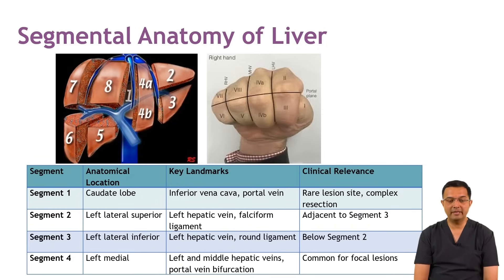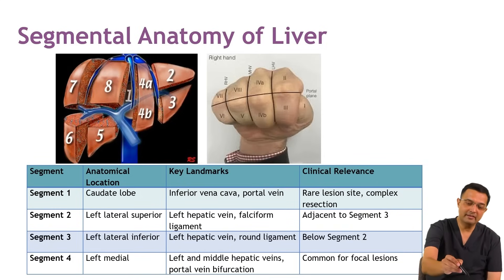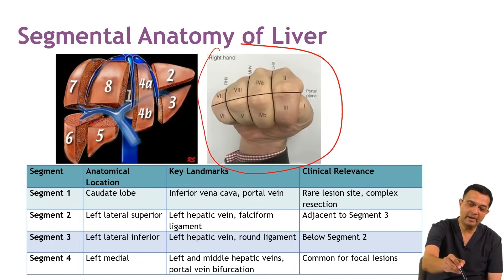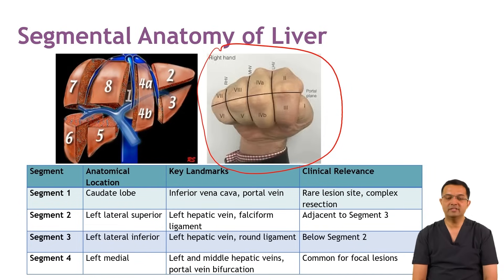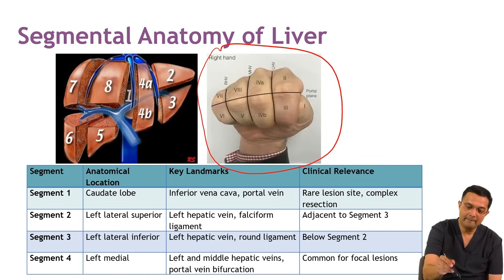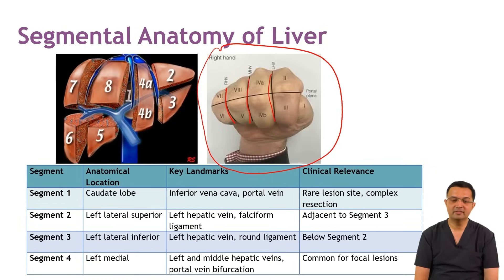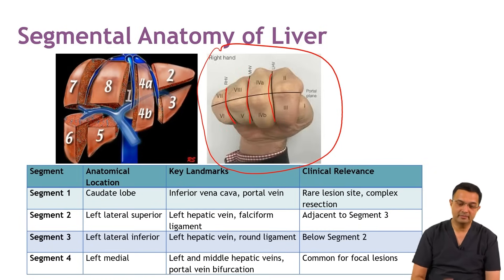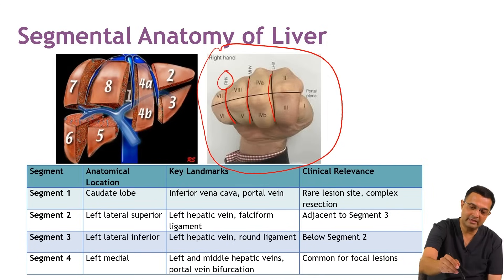Let us discuss the segmental anatomy of the liver. You can easily remember the segmental anatomy of the liver using the fist of the right hand. The spaces between the fingers indicate the location of the hepatic veins — the right hepatic vein, the middle hepatic vein, and the left hepatic vein.